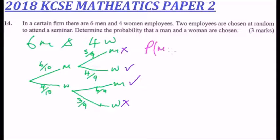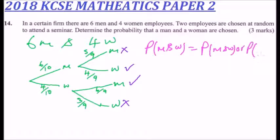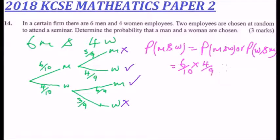The probability of a man and a woman being chosen equals the probability of choosing a man then a woman, or choosing a woman then a man. This gives us: six over ten multiplied by four over nine, plus four over ten multiplied by six over nine.